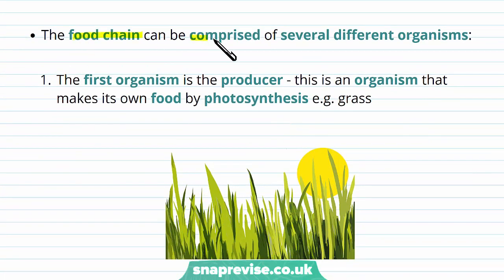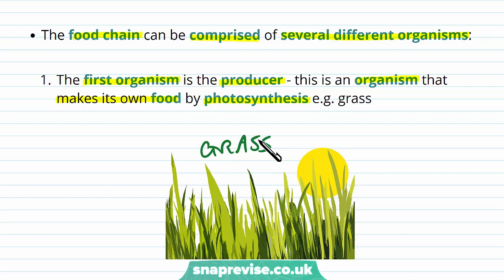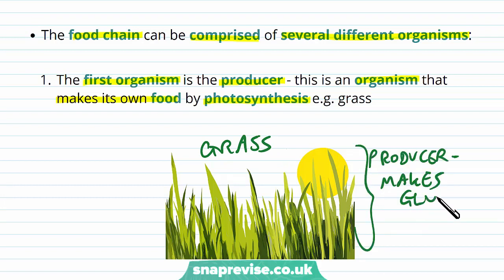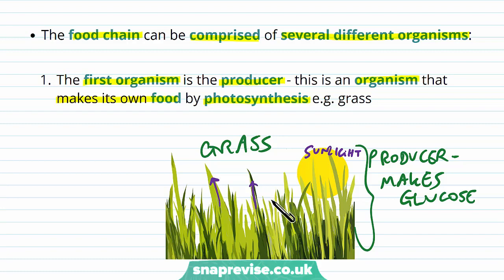The food chain can be comprised of several different types of organisms. The very first organism in the chain is the producer. The producer is an organism which makes its own food by photosynthesis, for example grass. Producers make food, or glucose specifically, as their own source of food. They use sunlight to do this and don't need to eat anything else — they just make their own food and grow and repair themselves with their own self-making mechanisms.